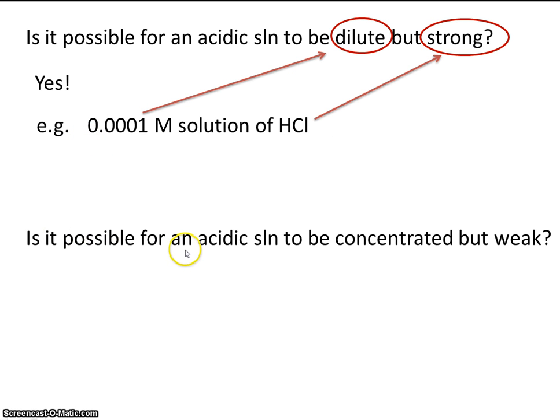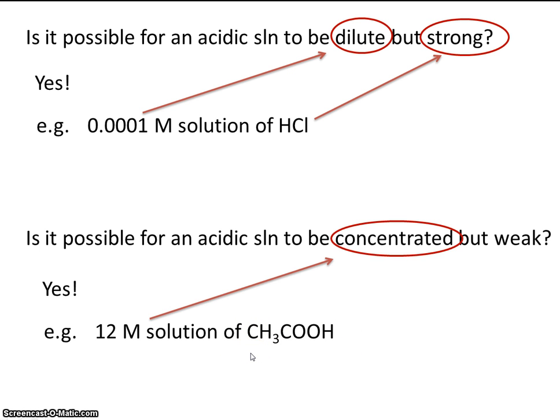Conversely, is it possible for an acidic solution to be concentrated but weak? Yes, that's also possible. Consider this. Consider a 12 molar solution of acetic acid. Remember acetic acid is vinegar, and vinegar is a weak acid. But a 12 molar solution, that's really concentrated. That's very concentrated. But it's concentrated with an acid that's considered a weak acid.